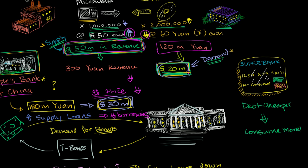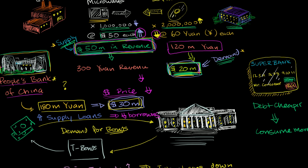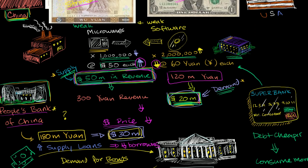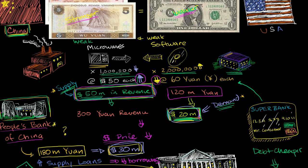So the end result, the big picture of what's happening here: in order to maintain a trade imbalance, in order to keep its currency pegged, you have the Chinese central bank essentially printing money, converting it to dollars, and then lending that to the US government and consumer. And what are they going to do with it? Essentially, they're going to end up buying more Chinese goods — in our simplified example, they'll buy even more microwaves. This is Salman Khan of the Khan Academy for CNBC.